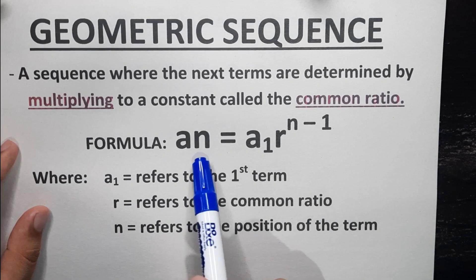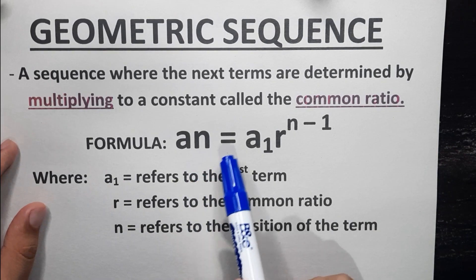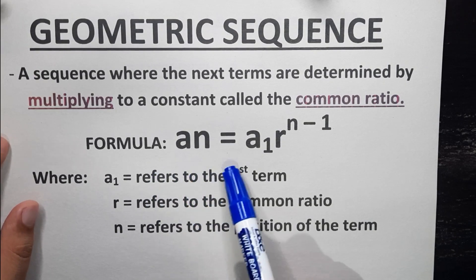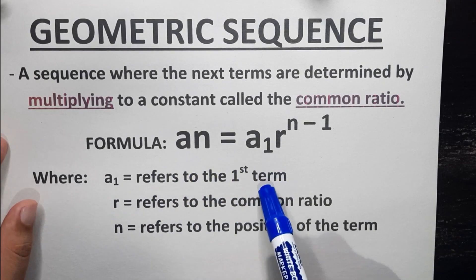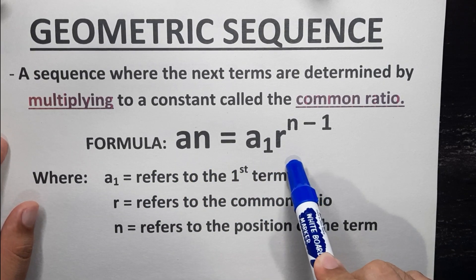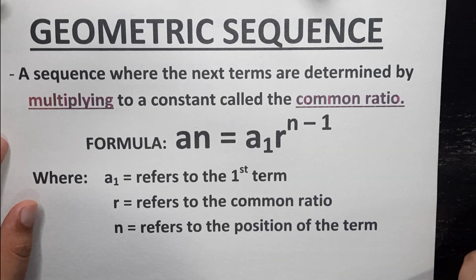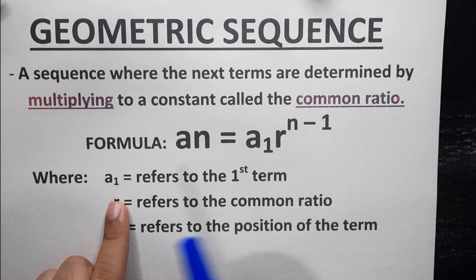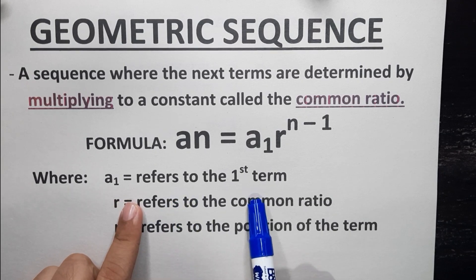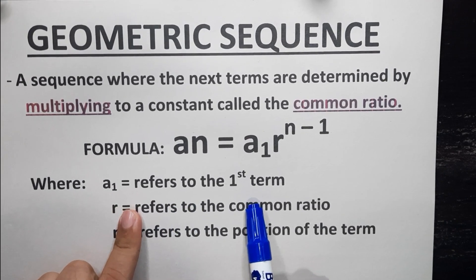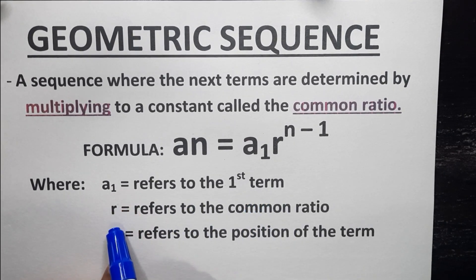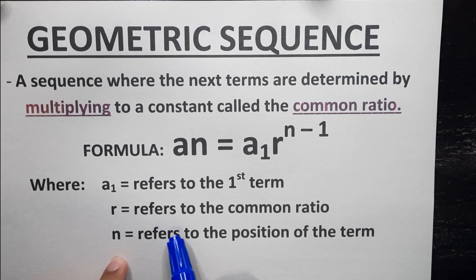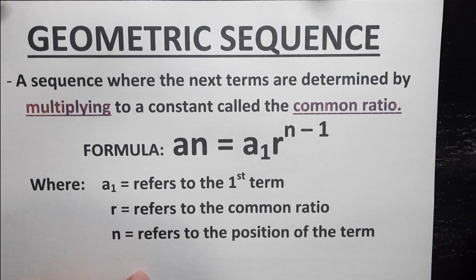The formula is a sub n is equal to a sub 1 multiplied by r raised to the power of n minus 1, where a sub 1 refers to the first term of the given geometric sequence, r refers to the common ratio, and n refers to the position of the term.